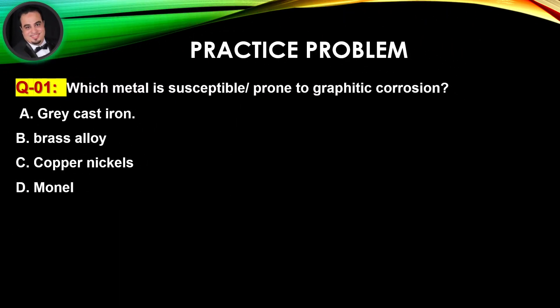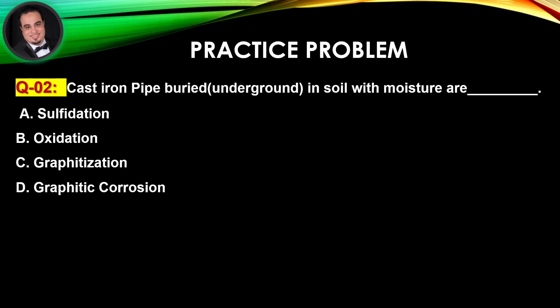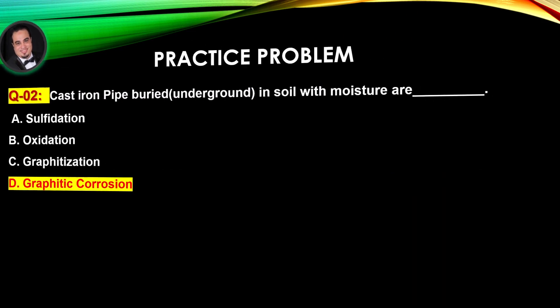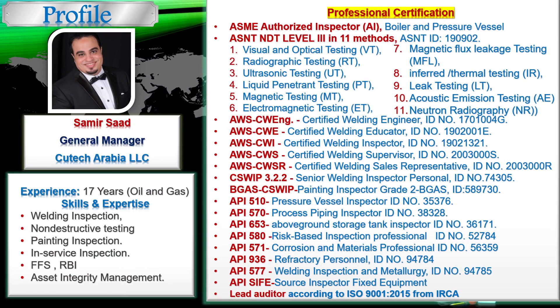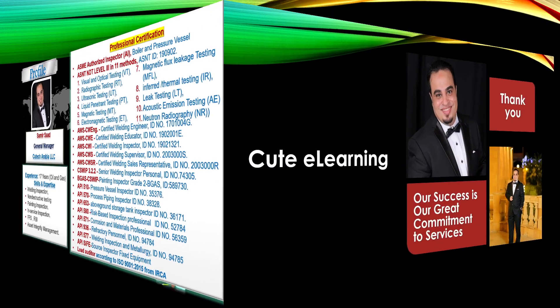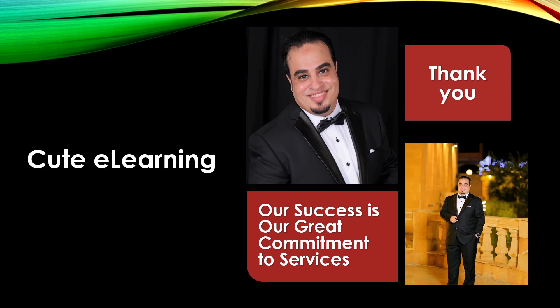Practice time. Question number one: Which metal is susceptible/prone to graphitic corrosion? Answer is A. Question number two: Cast iron pipe buried underground in soil with moisture are? Answer is D. This lecture is prepared by Samir Saad. Thanks a lot for watching — please stay tuned for the next lecture.